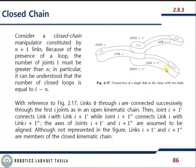With reference to figure 2.17, links 0 through i are connected successively to the first i joints as in an open kinematic chain. Then joint i+1 dash connects link i with link i+1 dash, while joint i+1 double dash connects link i with link i+1 double dash. The axes of joints i+1 dash and i+1 double dash are assumed to be aligned. Links i+1 dash and i+1 double dash are members of the closed kinematic chain.